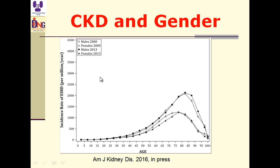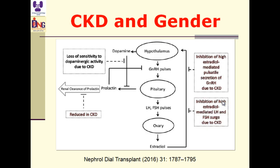Regarding gender: United States data from 2000 and 2013 show that the incidence of end-stage kidney disease is more common in men than women. Males are at higher risk for progression of CKD. CKD is more prevalent in men, and CKD is associated with disturbance of the hormonal environment in women.